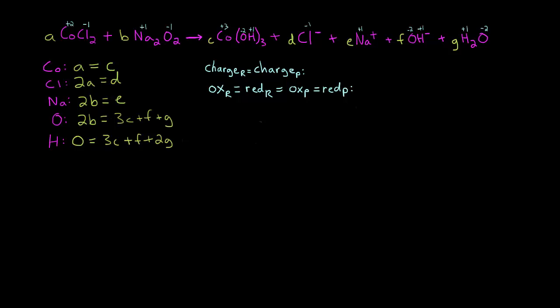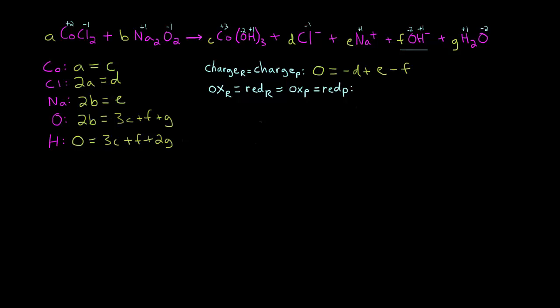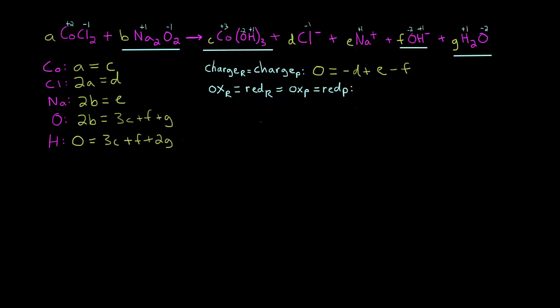Let's start by solving the charge equation. We look at each molecule and see what its formal charge is. The cobalt chloride has no net charge, and the second molecule has no net charge, so the entire left side is zero. On the right side we have a negative chloride ion, so negative D; a positive sodium ion, so plus E; a negative hydroxide, so minus F; and neutral water. Now looking at oxidation states: cobalt goes from plus two to plus three, so cobalt is being oxidized. Chlorine stays at minus one, sodium stays the same, and oxygen goes from minus one to minus two, so oxygen is being reduced.